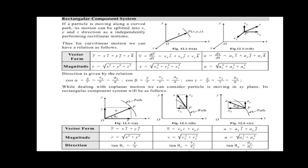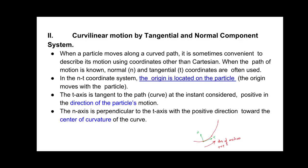For plane curvilinear motion in the rectangular component system: r̄ = xî + yĵ; velocity v̄ = vx·î + vy·ĵ; acceleration ā = ax·î + ay·ĵ. The magnitudes of position, velocity, and acceleration are computed from their respective components, and the direction of velocity along x and y can be found using the corresponding formulas.